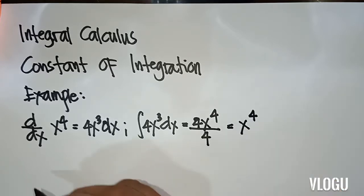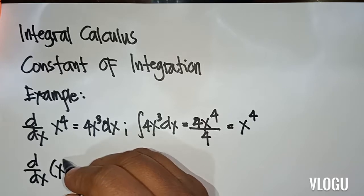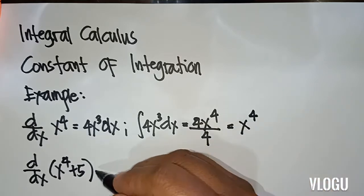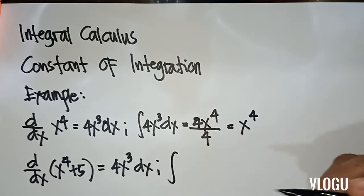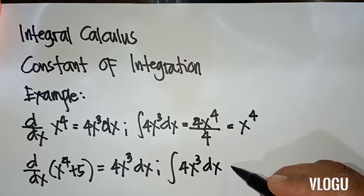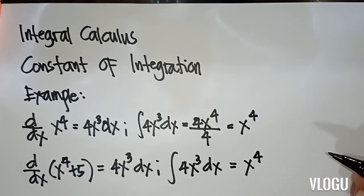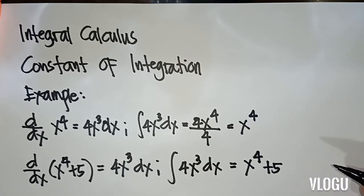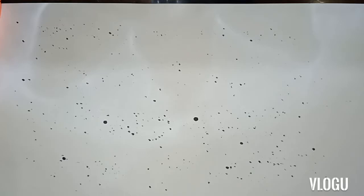Now if we have the derivative of d/dx of x to the fourth plus 5, the derivative is still 4x³ dx. And the integral of 4x³ dx is still x to the fourth — but then for your constant, that is equal to x to the fourth plus 5.